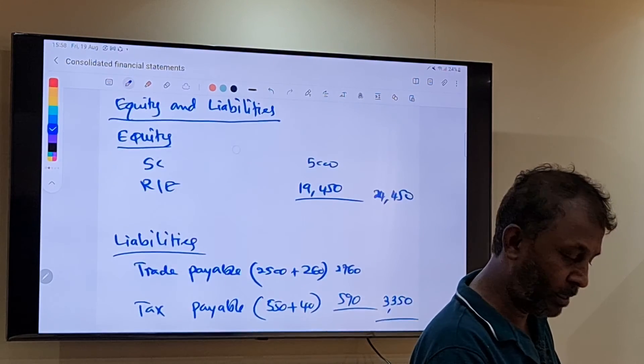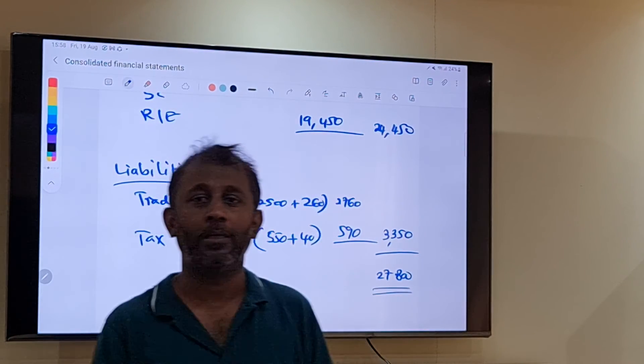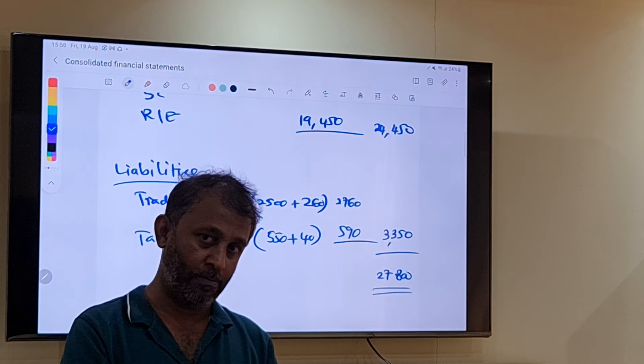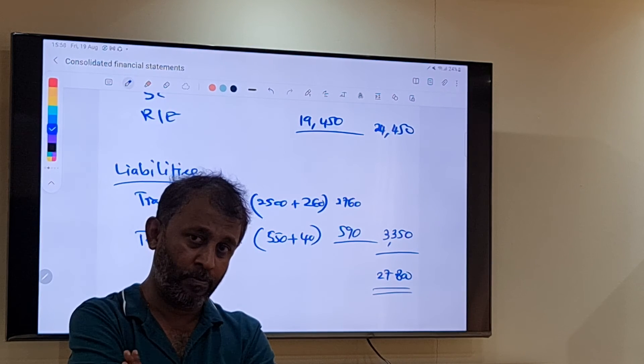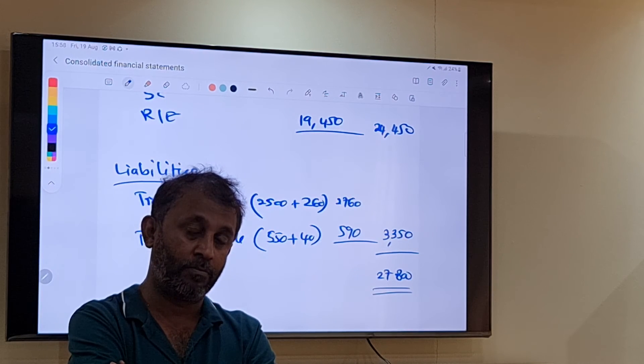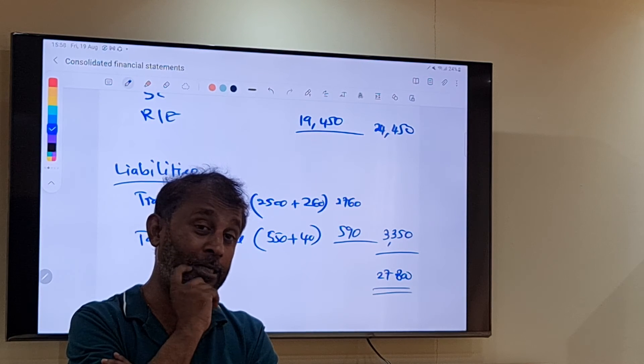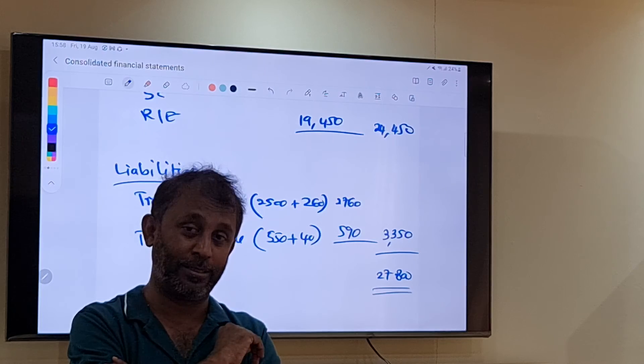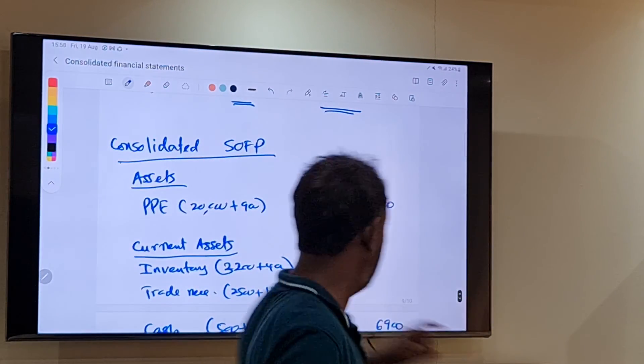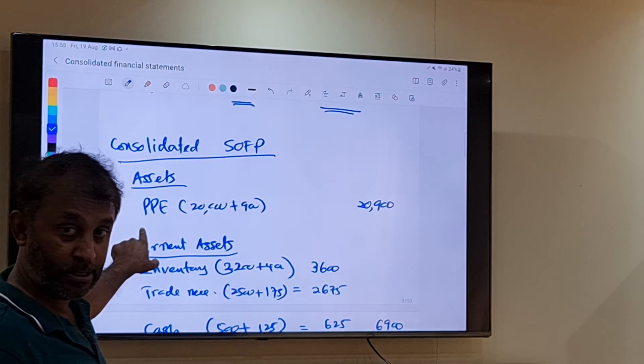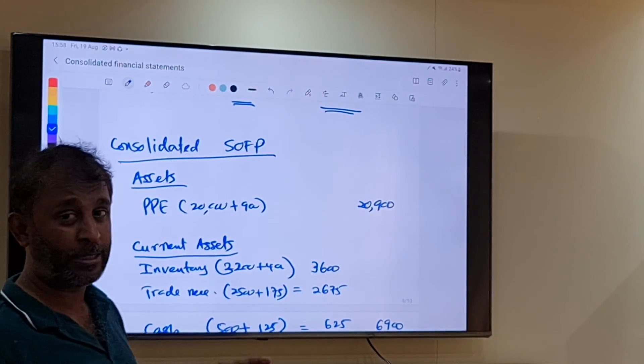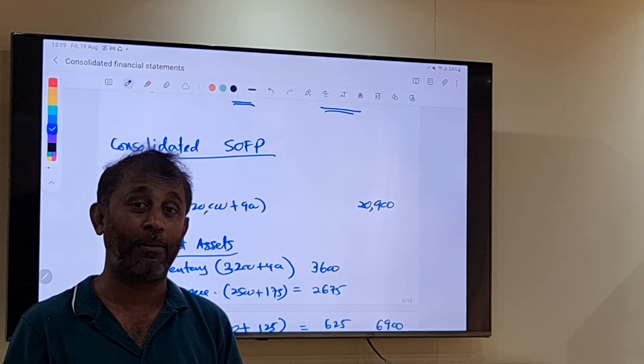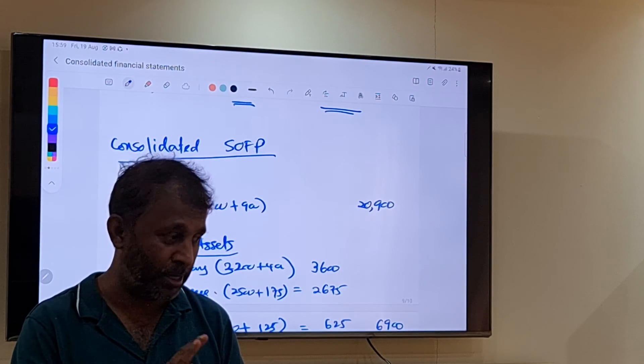Now in this example, the goodwill amount is zero. If the goodwill amount is positive, it is an intangible asset under non-current assets. But if it is a negative asset, there is a different treatment. If it is negative, it is like a capital gain, so you treat it as other income, which will not be in our syllabus.